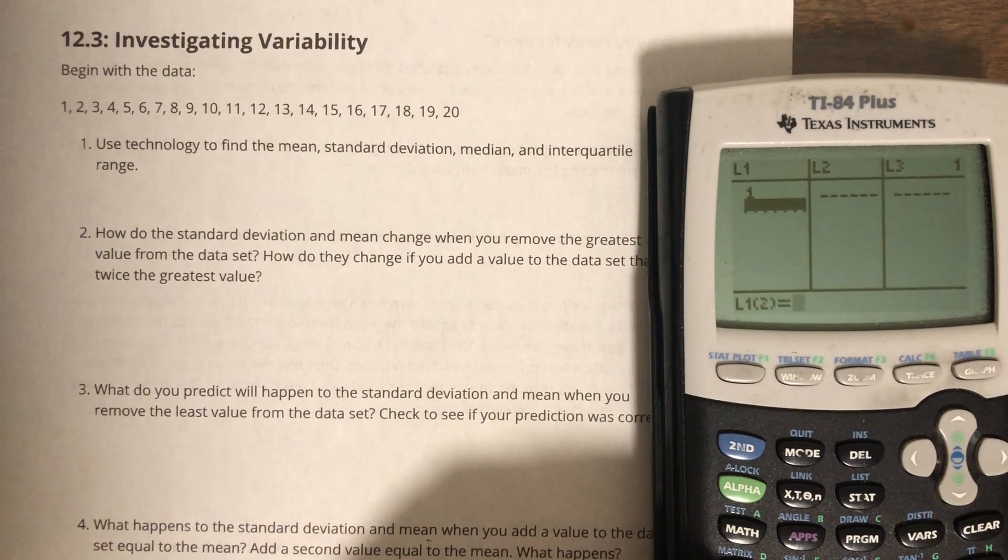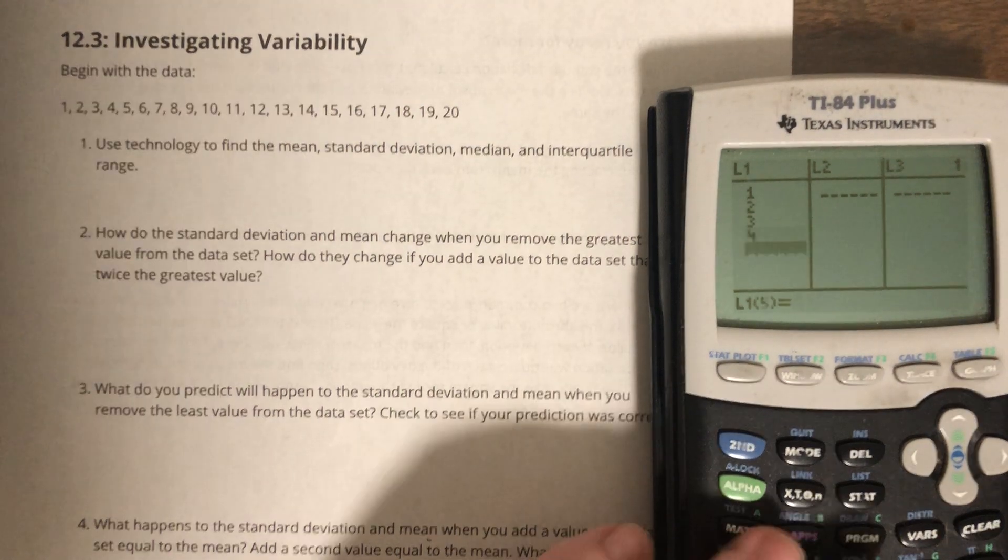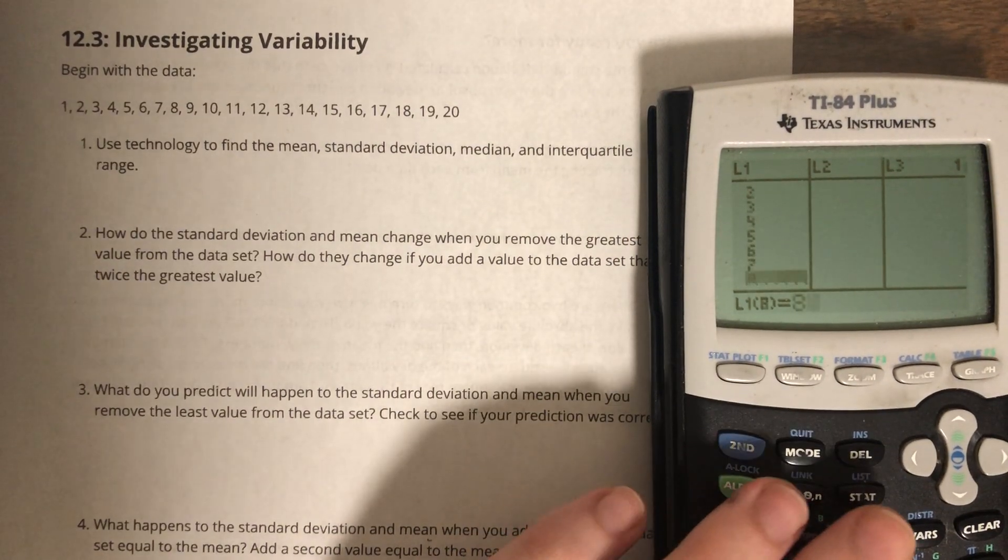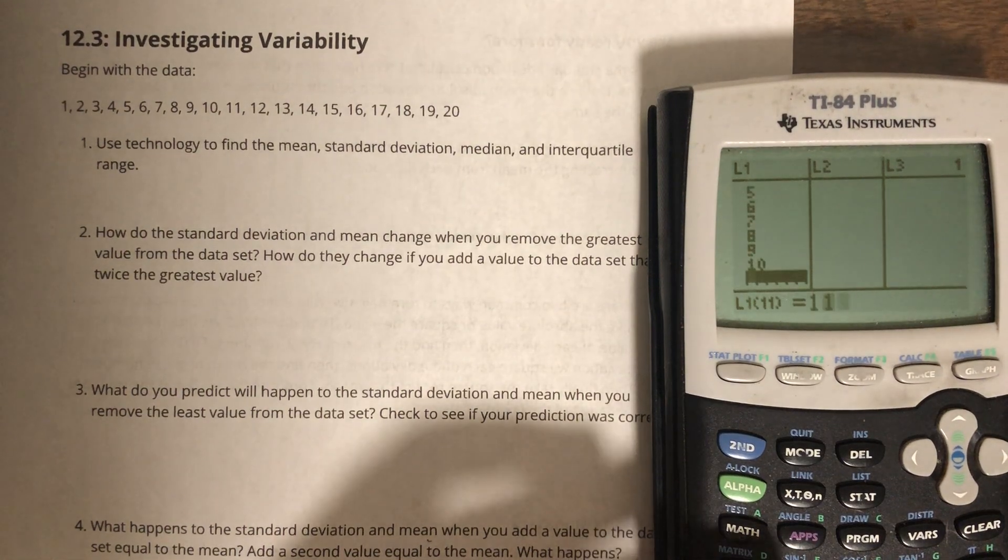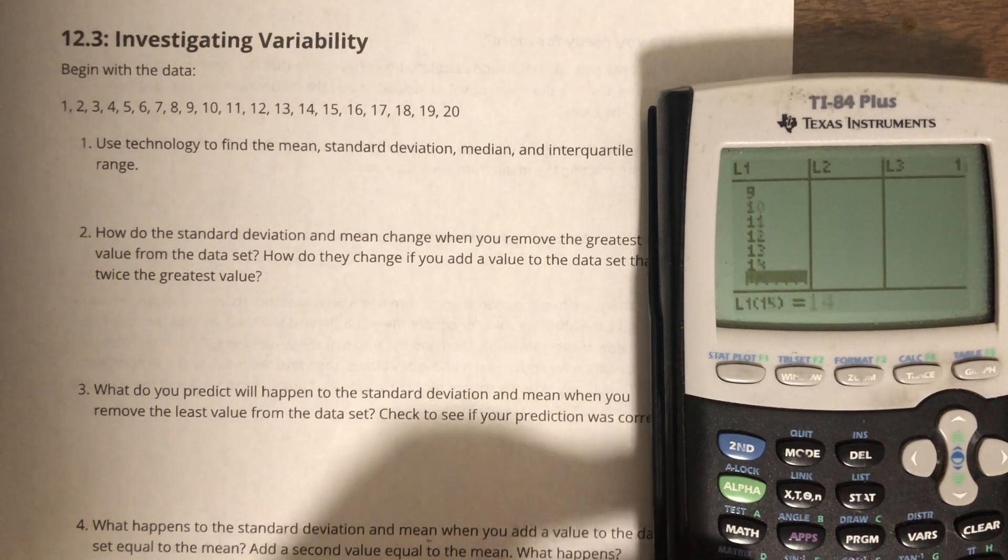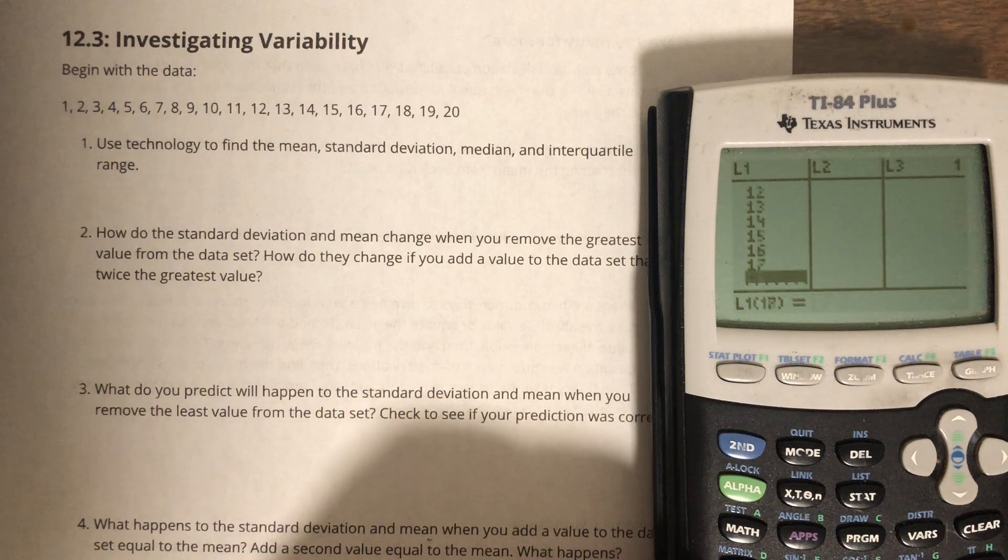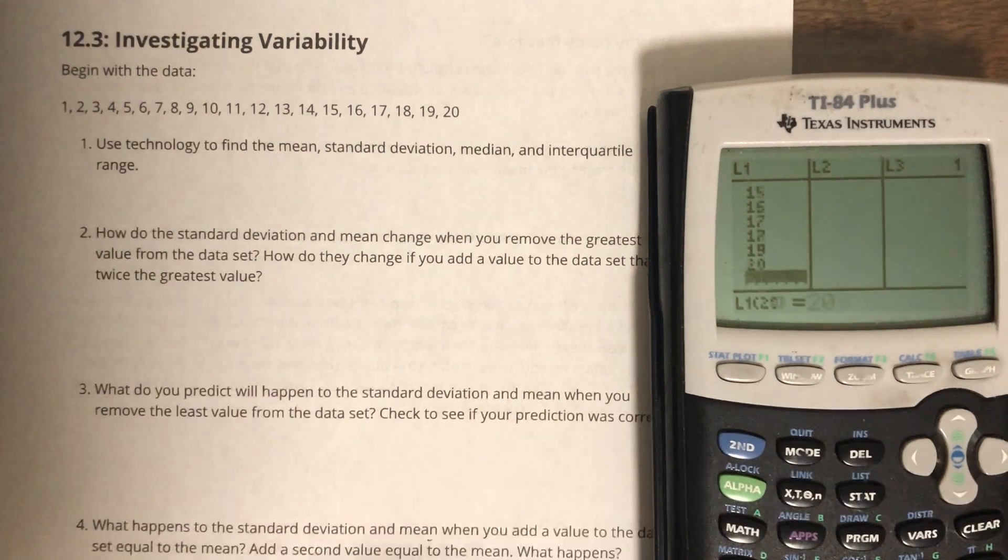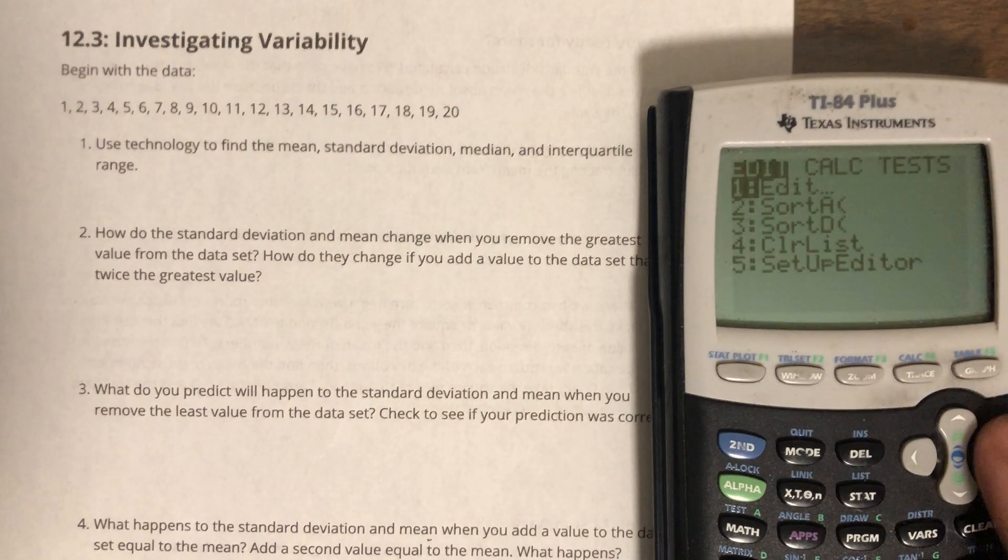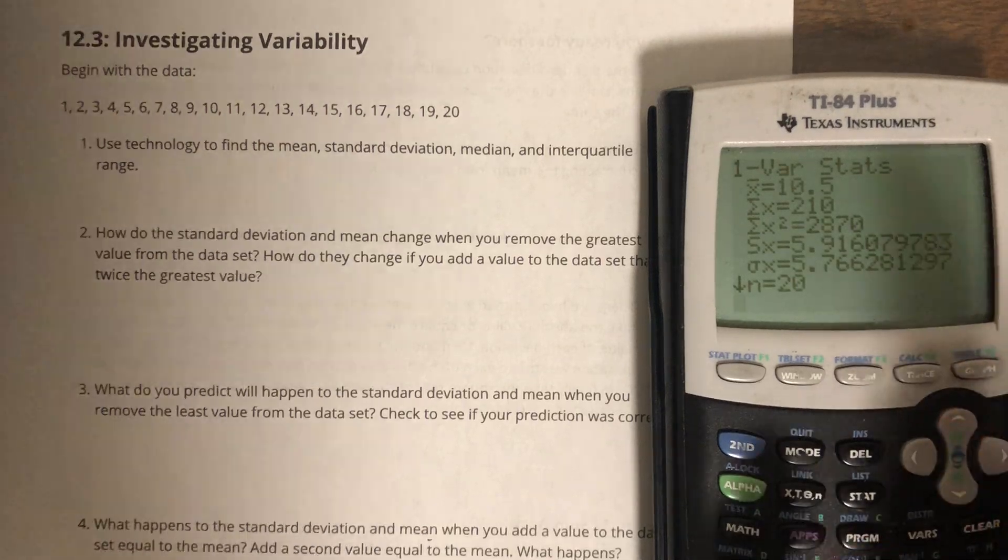1, 2, 3, 4, 5, 6, 7, 8, 9, 10, 11, 12, 13, 14, 15, 16, 17, 18, 19, 20. And then real quick, one variable stat gives me all the information I need.